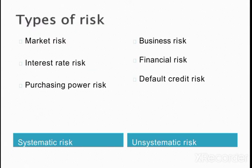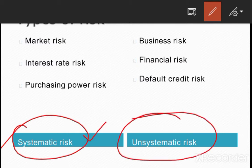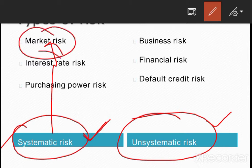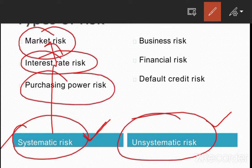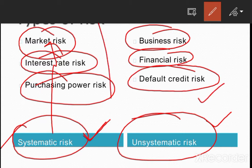When we talk about the type of risk, there are mainly two types: systematic and unsystematic risk. Systematic risk means that is not under any control. Unsystematic risk — if we change our policy or strategy, maybe we can control that risk in the near future. But in systematic risk, we cannot control that kind of risk. Systematic risk includes market risk, interest rate risk, and purchasing power risk. Unsystematic risk includes business risk, financial risk, and default/credit risk — where customers do not return your amount. These unsystematic risks are under the control of the business.